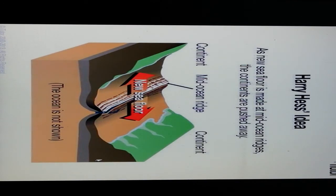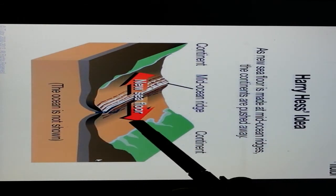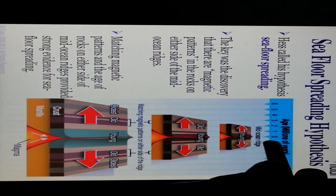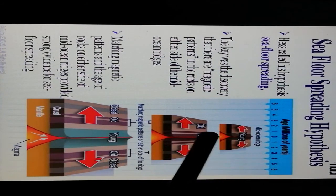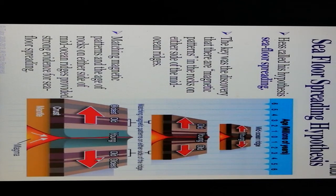Harry Hess proposed that as new seafloor spreads at the mid-oceanic ridges, it continuously pushes away. This is the mid-oceanic region where new seafloor is created. He called his hypothesis seafloor spreading. Over millions of years, the center age is 0 to 6, with older rock further away and younger rock near the mid-oceanic ridge. A key discovery was that there are matching magnetic patterns in rocks on either side of the mid-oceanic ridges, providing strong evidence for seafloor spreading.